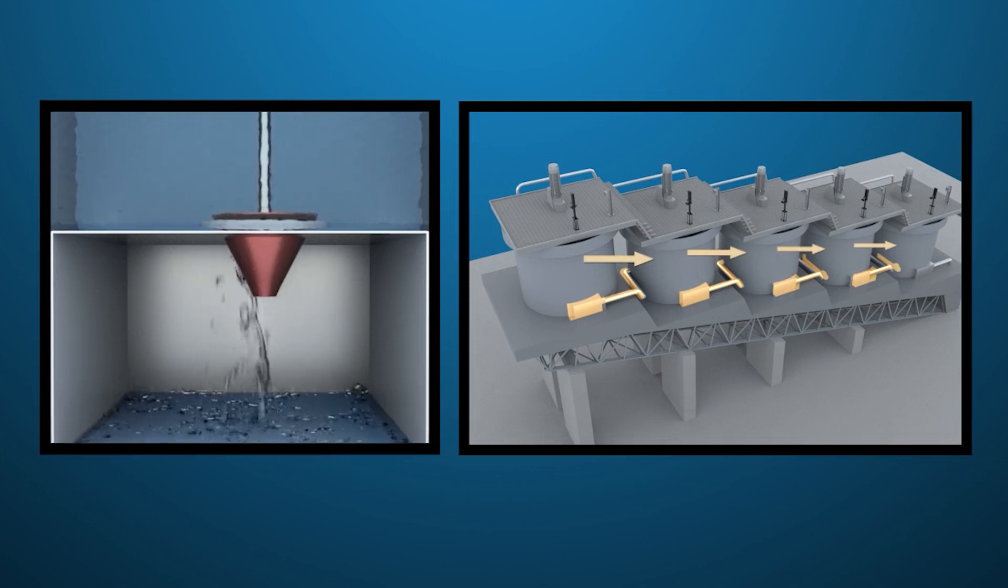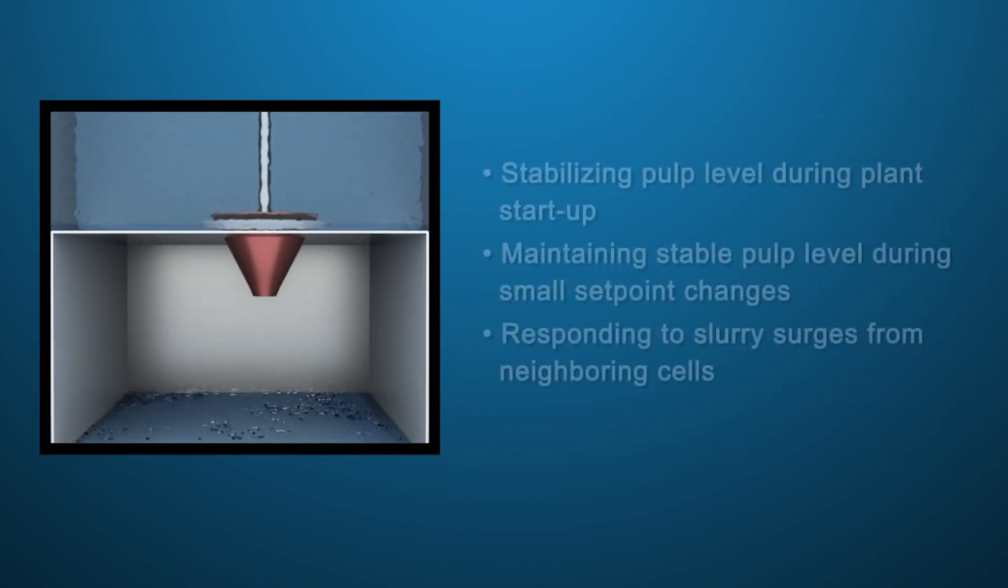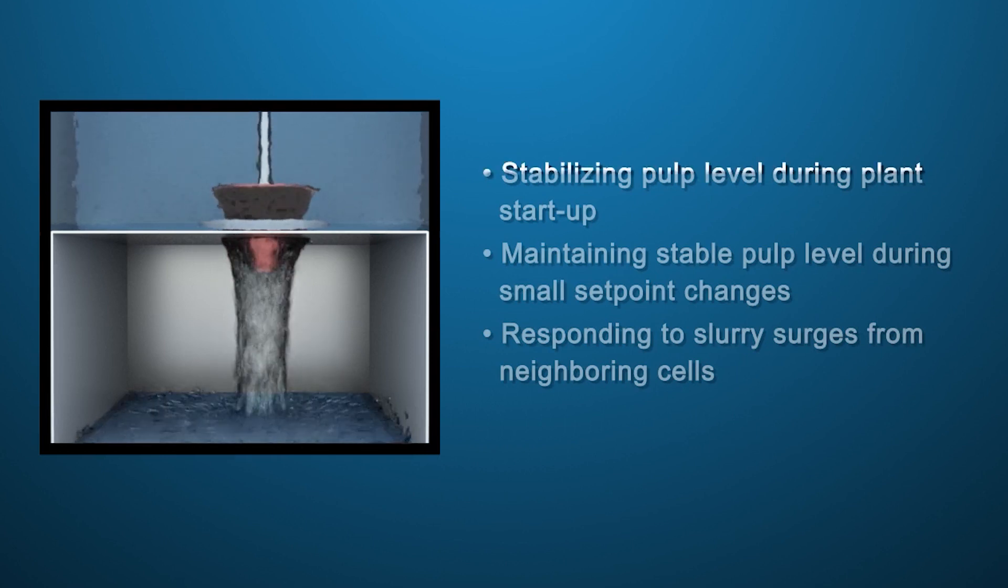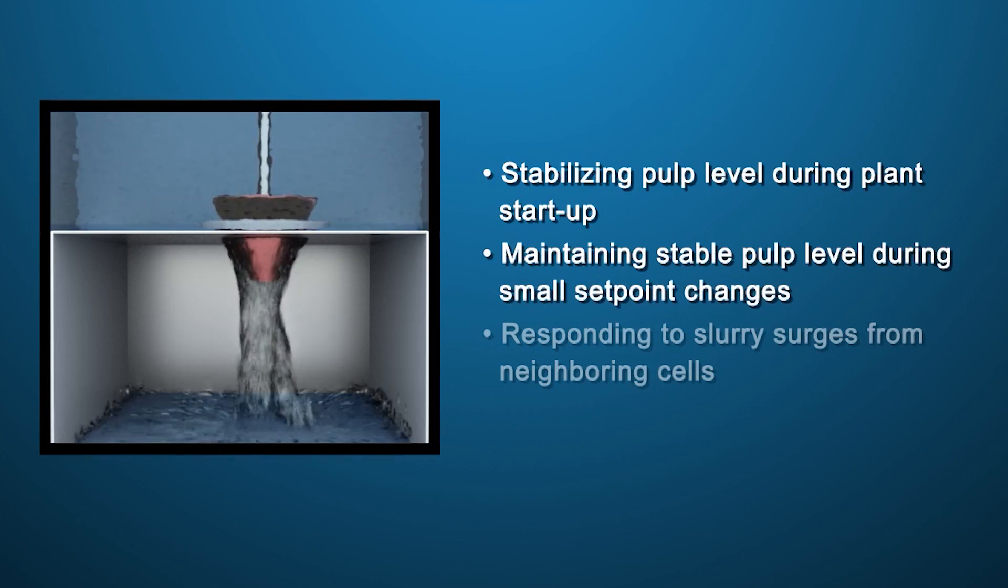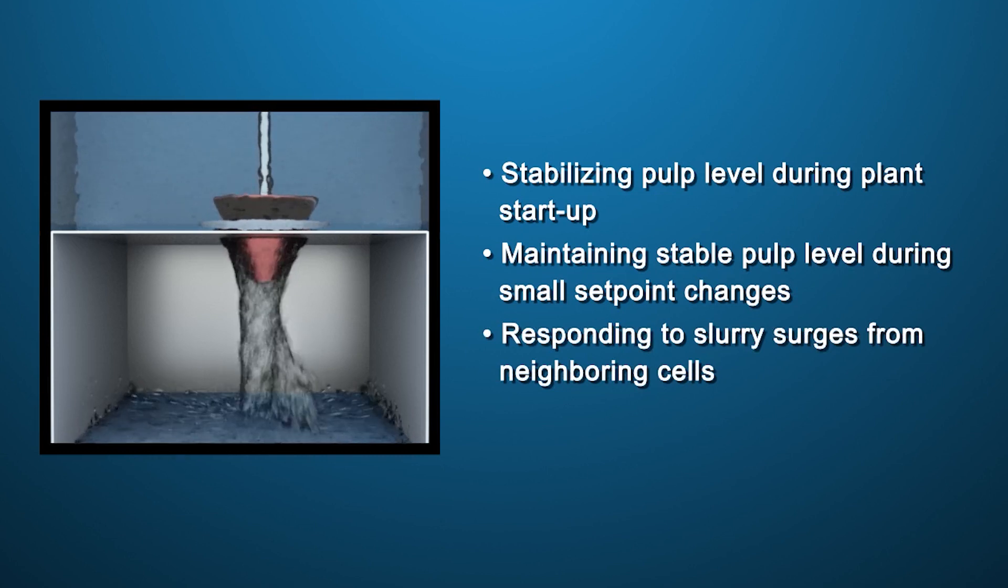Dart valve response time directly affects certain process scenarios: stabilizing pulp level during plant startup, maintaining stable pulp level during small set point changes, and responding to slurry surges from neighboring cells.